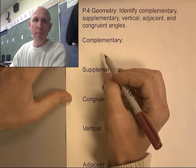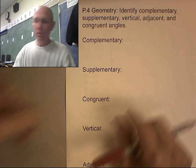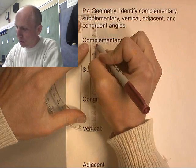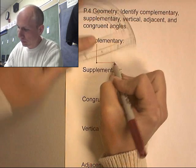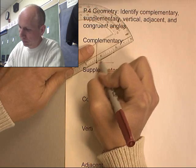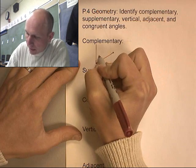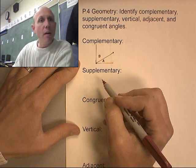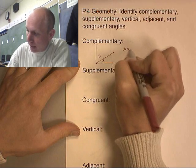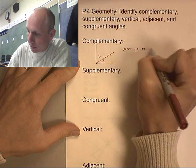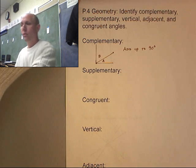So let's start with complementary. Complementary angles add up to 90 degrees. I'm going to draw two angles. So angle A and B add up to 90 degrees.